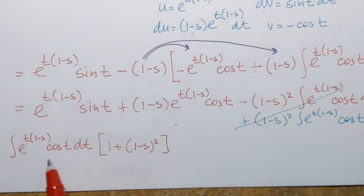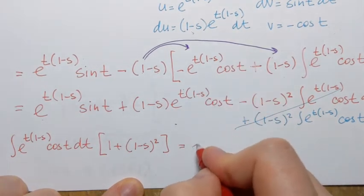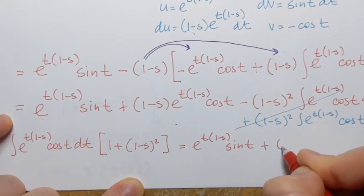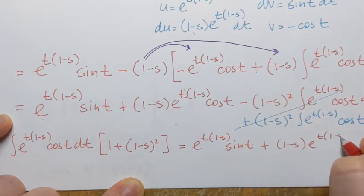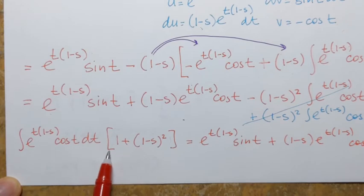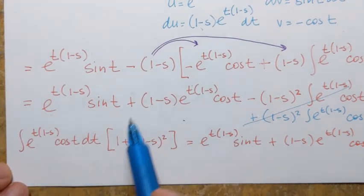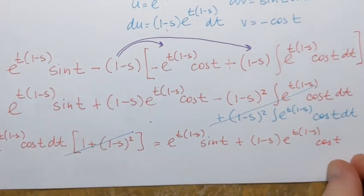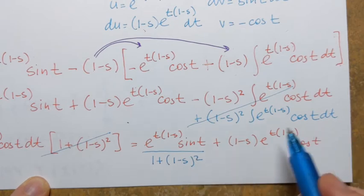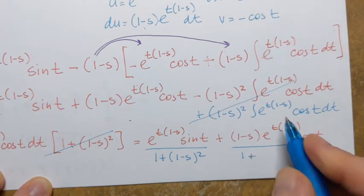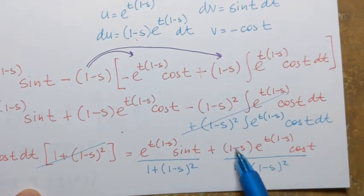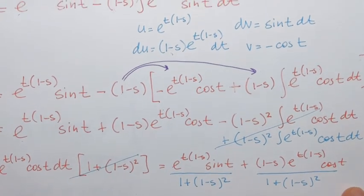To find what the integral equals, I divide both sides by that factor. On the left it cancels, and on the right the first term has [1 plus (1 minus s) squared] in the denominator, as does the second term — over [1 plus (1 minus s) squared]. By the way, those two expressions in numerator and denominator cannot be cancelled. Now we have to take all of that and evaluate it at b and 0 — this is where we started — and then apply the limit as b approaches infinity.